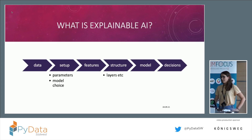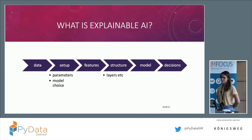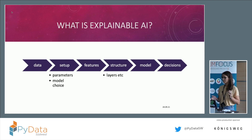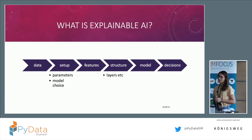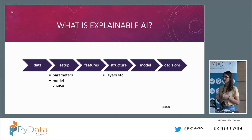So what is explainable AI? Maybe you've heard about that term, maybe you haven't. In general, it describes the processes and methods used to understand your AI systems better. As AI systems more and more become black box models, the need arises to really understand them. The goal is to achieve accuracy, fairness, to reduce biases, and to better understand the outcomes.